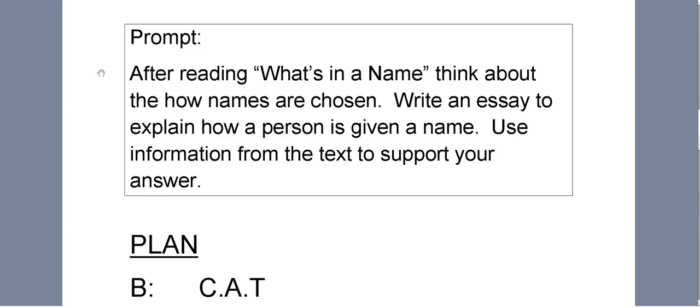The prompt says, after reading what's in a name, think about how names are chosen. Write an essay to explain how a person is given a name. Use information from the text to support your answer. When you read the prompt again, the first thing you're looking for is the type of writing. This has the word explain. This signals that you are doing explanatory writing. It can also be called informative or expository.